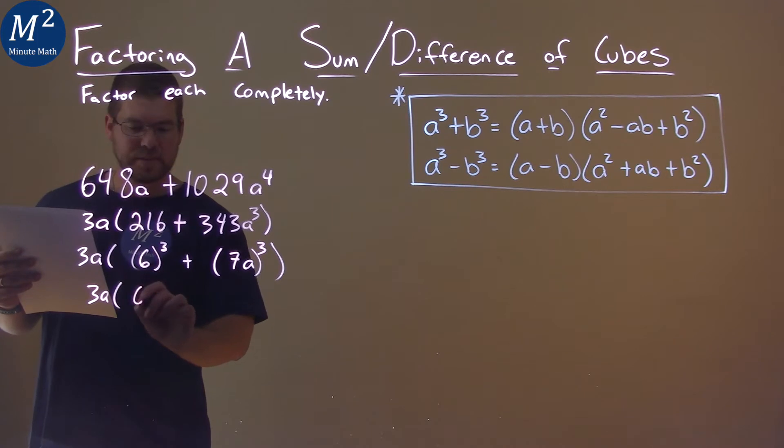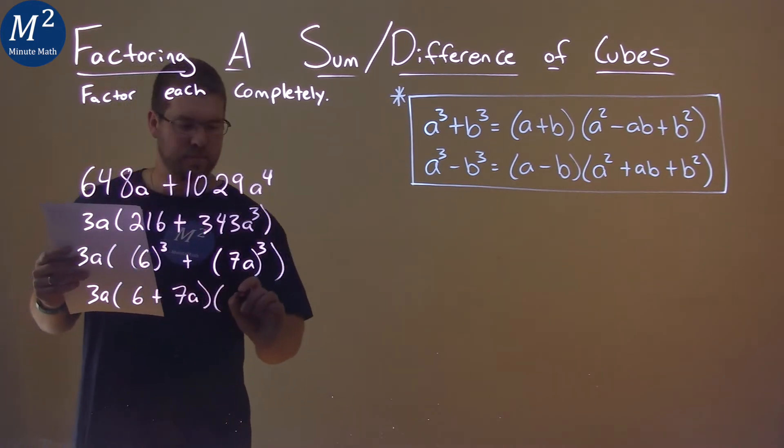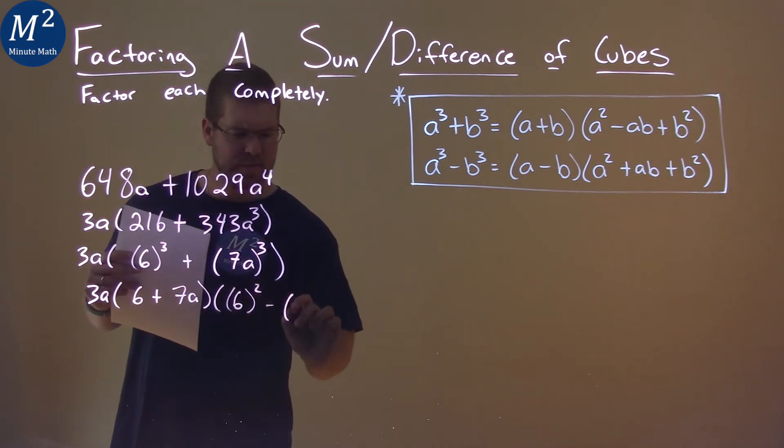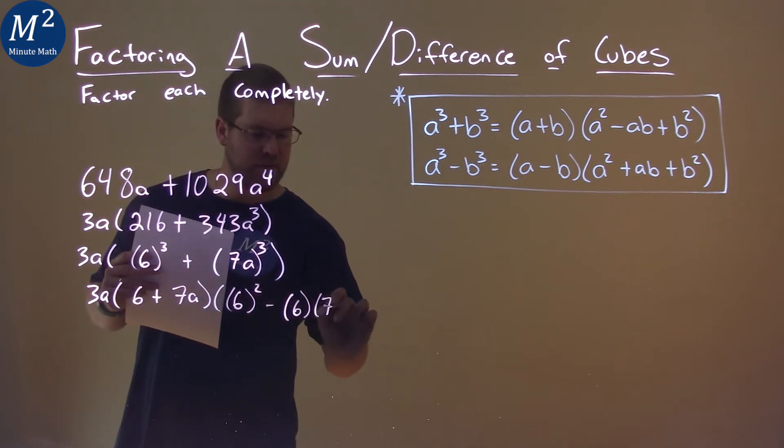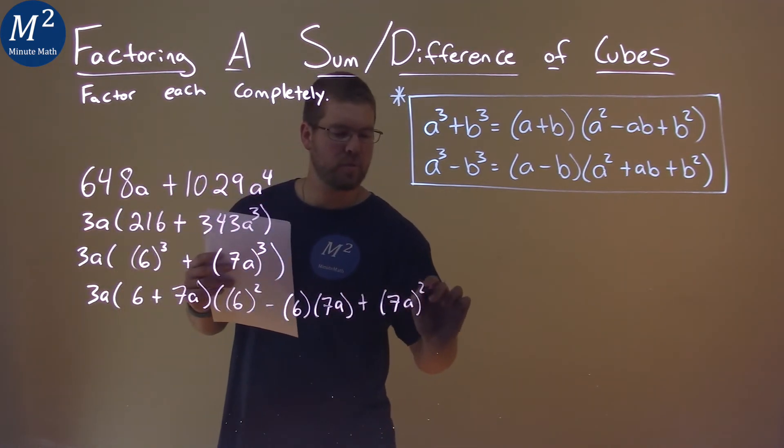following the formula, we have 6 plus 7a times 6 squared minus 6 times 7a plus 7a all squared.